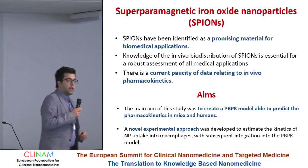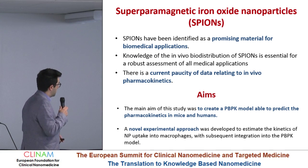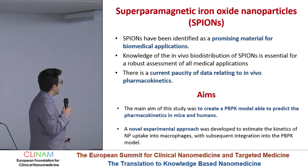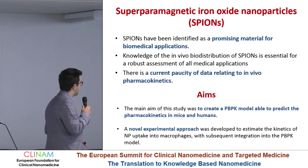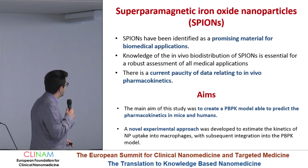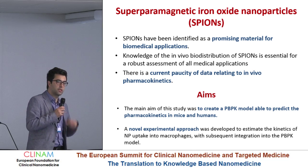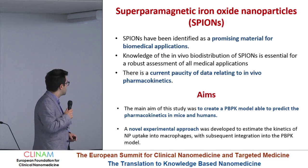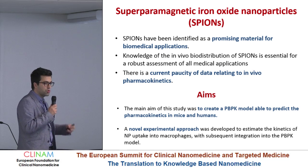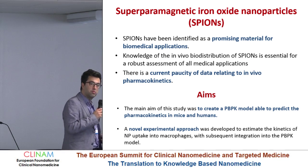What we used in this specific project is a SPION — superparamagnetic iron oxide nanoparticle — in collaboration with the University of Santa Catarina in Florianopolis in Brazil. The aim of our study was to try and create a PBPK model to predict bio-distribution of SPIONs in mice and humans, and also to develop an experimental approach to measure the uptake of nanoparticles by macrophages to inform our PBPK model.